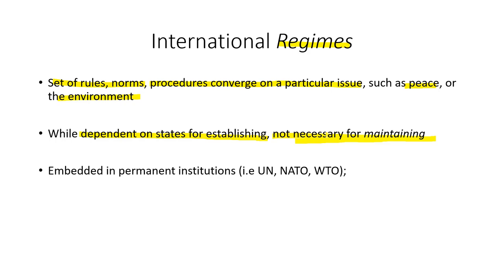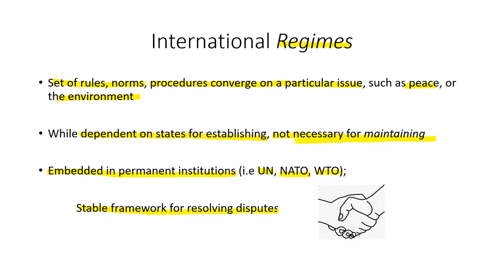When international organizations are created, they develop their own sense of autonomy, even though they're put together and represented by various states. This regime becomes embedded in a permanent form of institution — such as the United Nations, where many treaties begin through conventions, NATO, or the World Trade Organization. These are permanent institutions addressing certain global issues, creating a regime of oversight, regulation, or cooperation. This stable framework can be used for resolving disputes — not perfect, but providing an alternative to conflict.